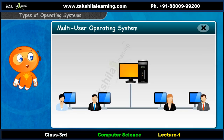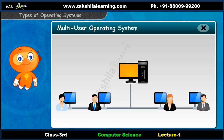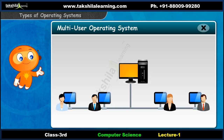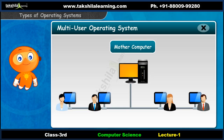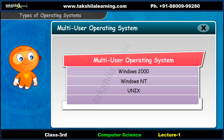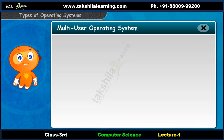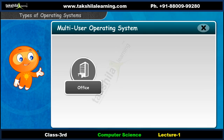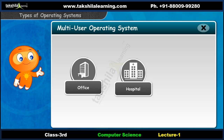A multi user operating system allows many people to work using the same computer at the same time or different times. The main computer is attached to many other computers — it is called the mother computer. Operating systems such as Windows 2000, Windows NT, Unix, Linux, and so on are multi user operating systems, used in offices, hospitals, and railway stations.